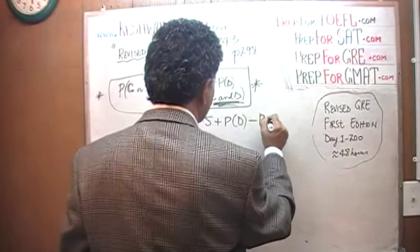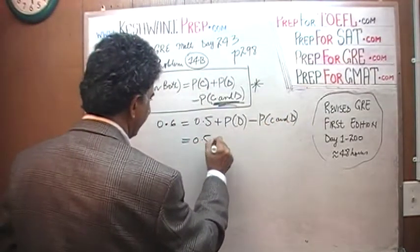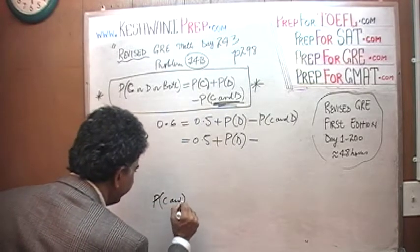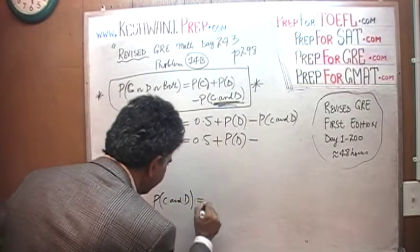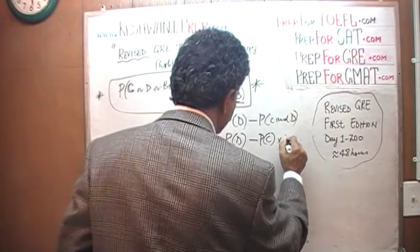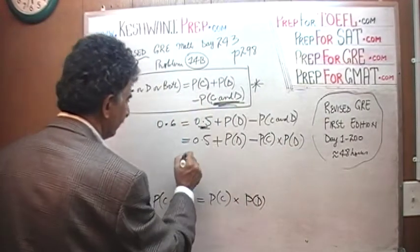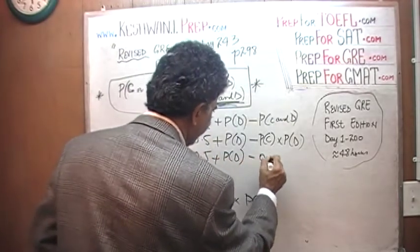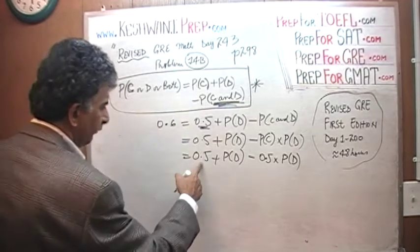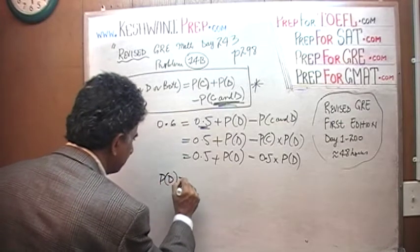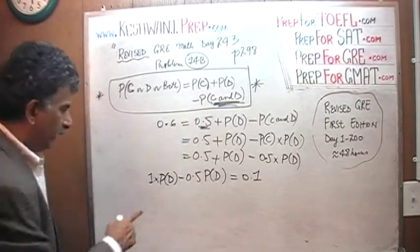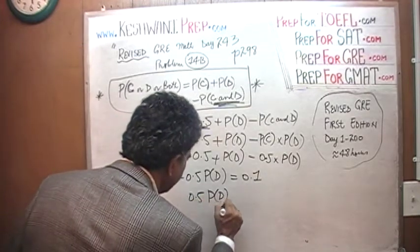So: 0.6 = 0.5 + P(D) minus P(C and D). Since the events are independent, P(C and D) equals P(C) times P(D), which is 0.5 times P(D). Substituting: 0.6 = 0.5 + P(D) minus 0.5 × P(D). Subtracting 0.5 from both sides: P(D) minus 0.5 × P(D) = 0.1. Since 1 minus 0.5 equals 0.5, we get 0.5 × P(D) = 0.1.